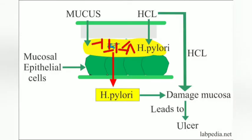Increased gastrin from G cells in the stomach and duodenum increases gastric acid secretion and promotes growth of the gastric mucosa.